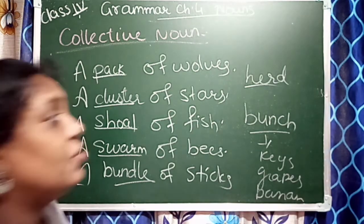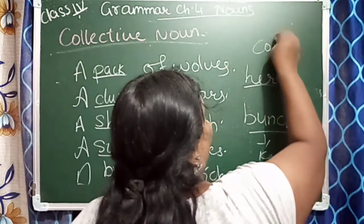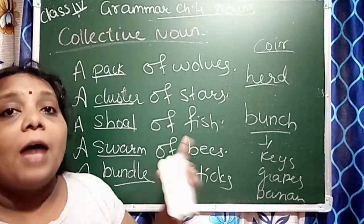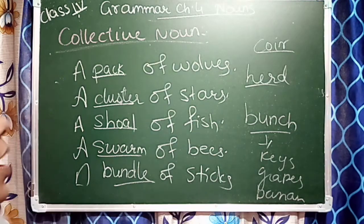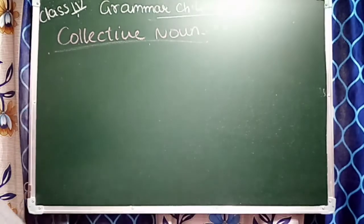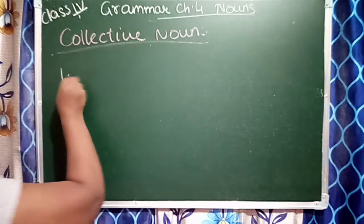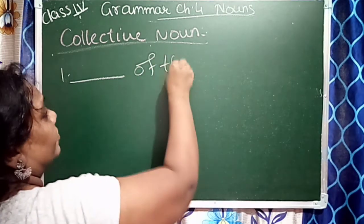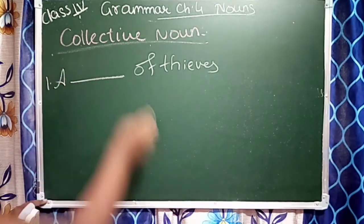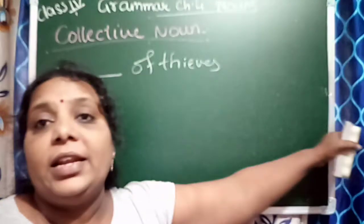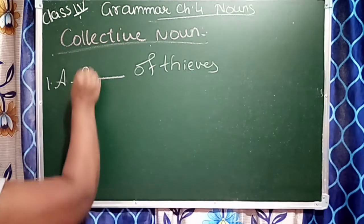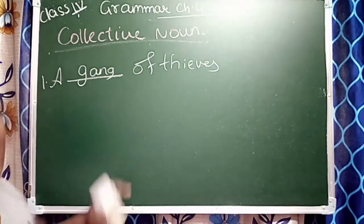A dash of singers — singers का group में क्या बोलते? Choir — a choir of singers. अभी next exercise: complete the sentences with the collective noun. पहला है: a dash of thieves is active in the city — तो इसमें क्या लिखेंगे? A gang of thieves.